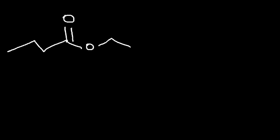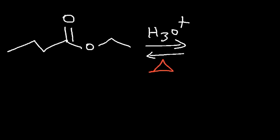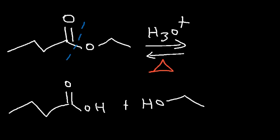Now let's work on some problems. What products will form if you add H₃O⁺ to this particular ester? By the way, adding water to an ester alone is not going to be enough to turn it into a carboxylic acid — the reaction is too slow. You need to add H₃O⁺, you need an acid catalyst, and you also need heat to speed up the process. Once you add water under acidic conditions, this bond is going to break. On the left side you're going to get a carboxylic acid; on the right side you're going to get an alcohol.